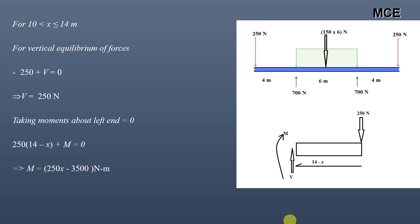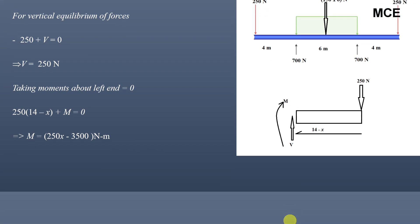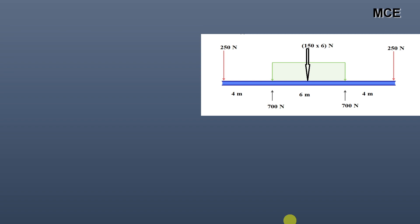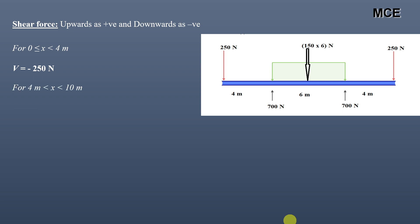After finding the shear and moment functions for the three parts of the beam, we can now draw the shear force and moment diagrams. For the shear force diagram, assuming upward as positive and downward as negative: for the first part (0 to 4 meters), shear force is constant at minus 250 newtons. For the second part (4 to 10 meters), shear function is 1050 minus 150x. Putting x equals 4, shear equals 450 newtons.